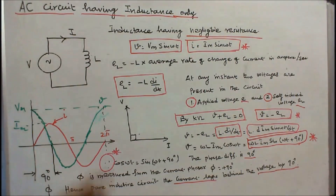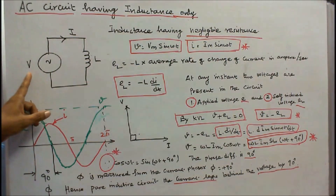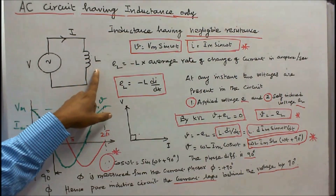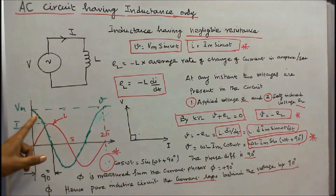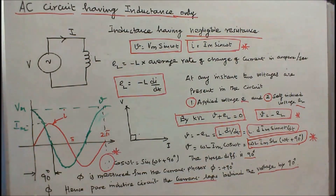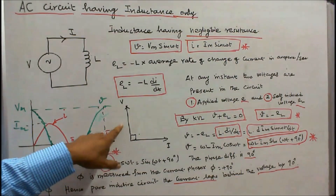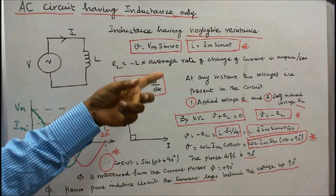Second is AC circuit having inductance only. Here we connect an inductor L having negligible resistance. The green waveform is voltage and the red waveform is current. Vm and Im are the respective peak values. The phase difference is 90 degrees measured from the current waveform. This is a phase diagram.